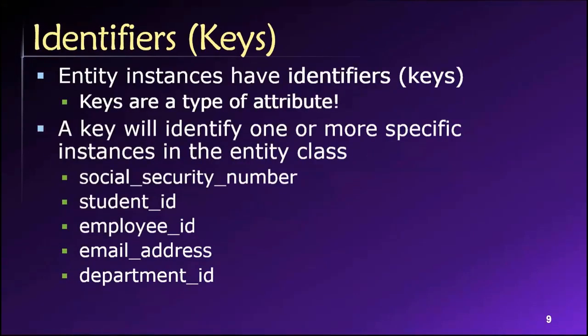Similarly, in the entity relationship modeling world, we have identifiers and we're aware of this concept already in the form or with the name keys. So we know about primary keys, we know about foreign keys, and we know that keys are a type of attribute. They serve many purposes, as we've already learned. The primary keys have a major role in ensuring uniqueness among all the rows within a table.